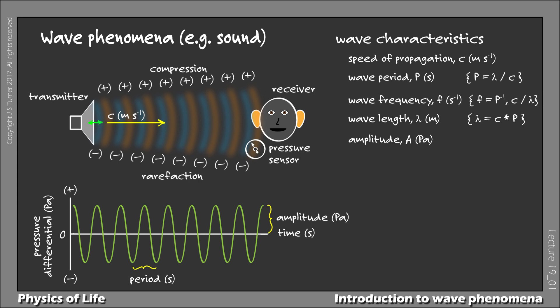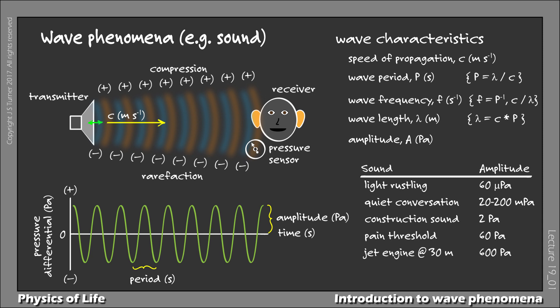Let's put some figures on sound amplitude. Sound amplitudes are very small pressures compared to the atmospheric pressure. The atmospheric pressure is typically on the order of a hundred kilopascals or so. A light rustling sound, in contrast, has an amplitude of only 60 micropascals. And quiet conversation has an amplitude of 20 to 200 millipascals. If you're on a noisy construction site, the sound amplitude is still quite small, only 2 pascals. A sound amplitude sufficient to cause pain in the ears is about 30 times larger than this, but the pressure oscillation is still only about 60 pascals. Finally, if you're standing about 30 meters from a jet engine, you're experiencing an amplitude on the order of 600 pascals.